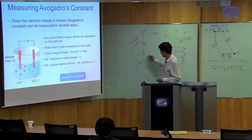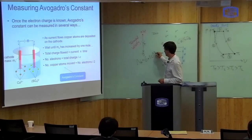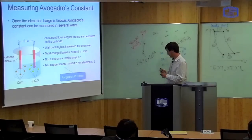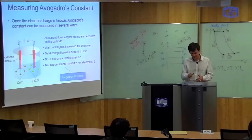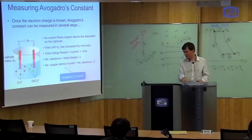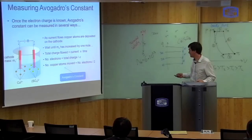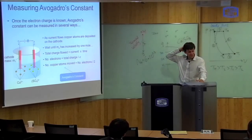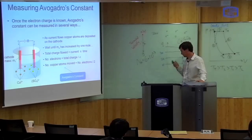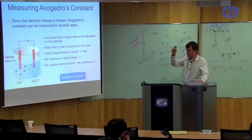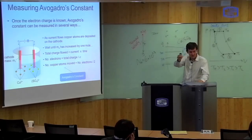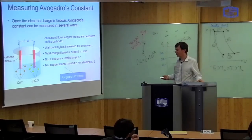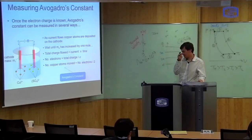Because you know the electron charge, you can work out how many electrons have flowed around the circuit — the number of electrons equals the total charge divided by the charge of one electron. And you know that for each two electrons, you get one copper atom. So you wait until the mass increases by one mole, measure the charge, calculate the number of electrons, calculate how many copper atoms have moved, and in this way you determine Avogadro's constant — about 6 times 10 to the 23 — all by indirect methods.